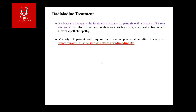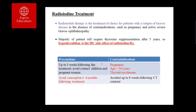Radioiodine therapy is the treatment of choice for relapsed Graves' disease but is not first-line. It should not be given in pregnancy or when conception is planned. Most patients eventually require thyroxine supplementation because over three to five years the entire gland can be destroyed, leading to hypothyroidism.